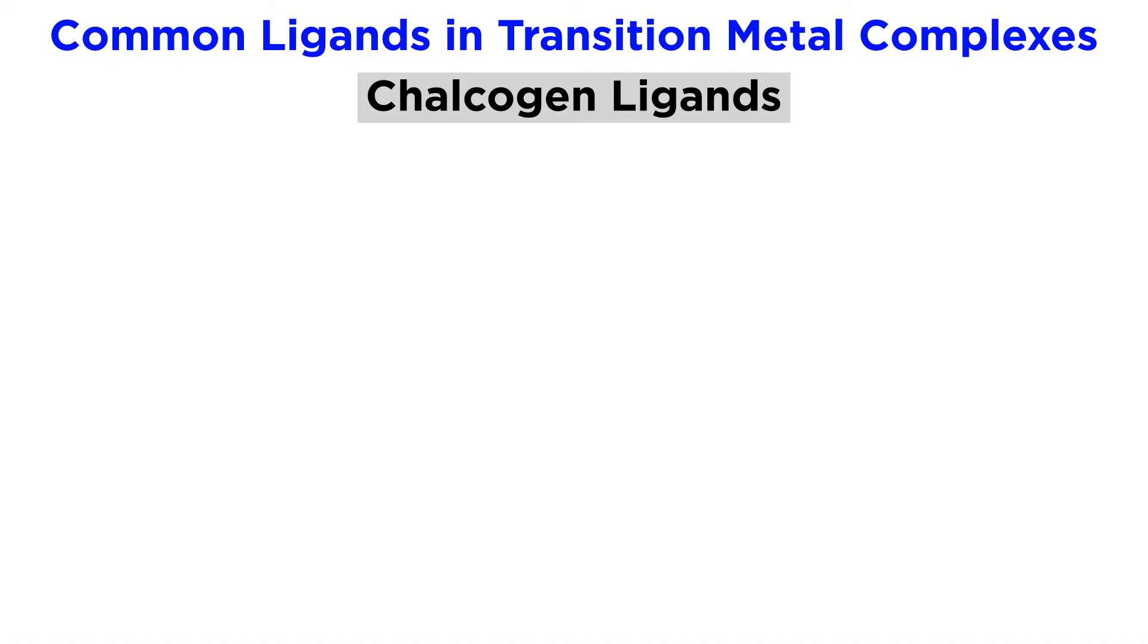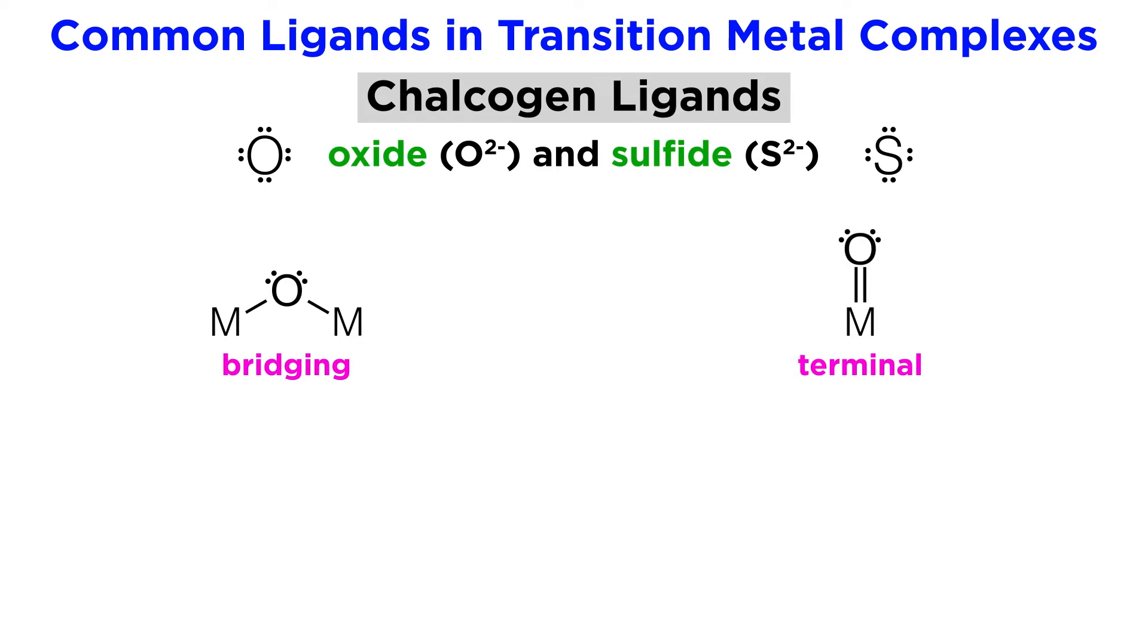Now from the halogens we move to the chalcogen ligands. Oxide and sulfide ions, which each have four lone pairs, can both act as ligands, and they can do so from either a bridging position, where they make two bonds to two different metal atoms, or a terminal position where they make two bonds to the same metal atom. Oxygens in these positions would be sp3 and sp2 hybridized respectively, as we would expect.